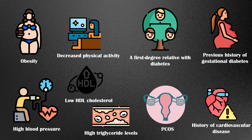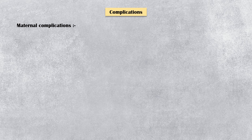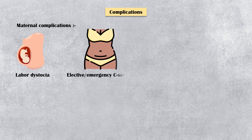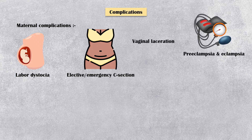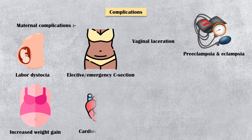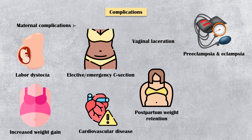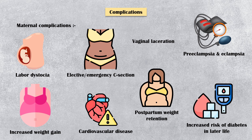If not recognized and managed early, gestational diabetes can lead to serious complications. Maternal complications include labor dystocia or abnormally slow delivery, elective or emergency caesarean section, vaginal laceration, preeclampsia and eclampsia — two serious conditions characterized by increased maternal blood pressure — increased weight gain during pregnancy, cardiovascular disease, postpartum weight retention, and increased risk of diabetes in later life.